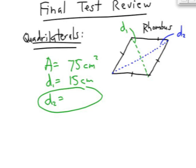The formula for the area of a rhombus is one-half d1 times d2. So if I know both diagonals, I multiply them together and take half of it.